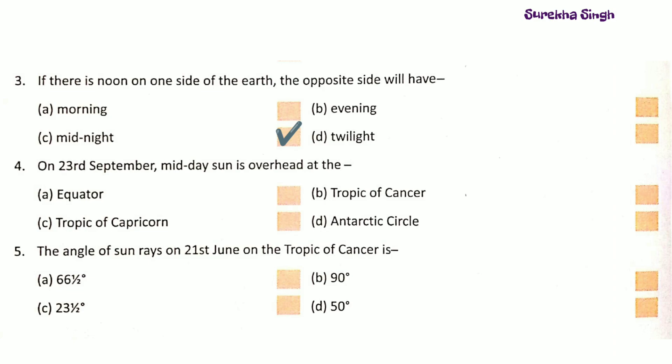Question 4: On 23rd September, midday sun is overhead at the Option A: Equator.